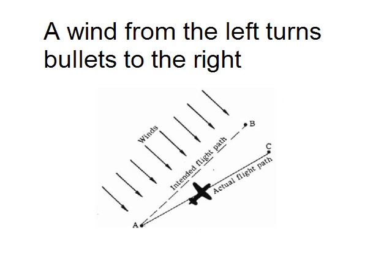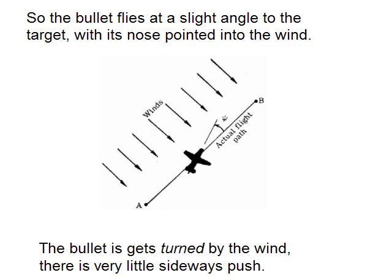Obviously, wind from the left turns bullets to the right. And as you know, an aircraft in a wind flies at a slight angle to the direction it's actually travelling. Just out of interest, bullets do the same thing.